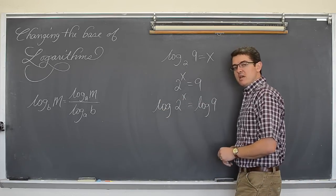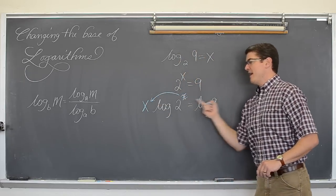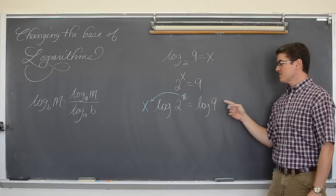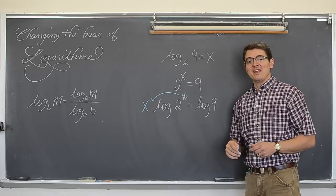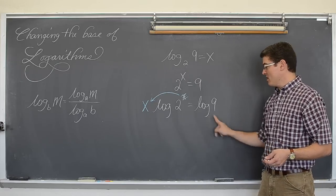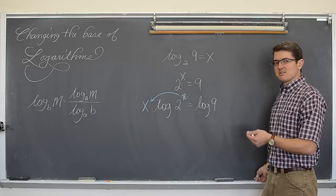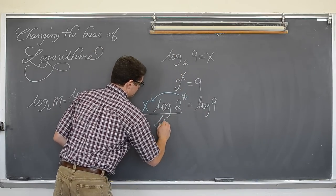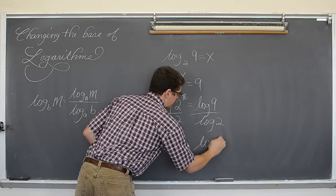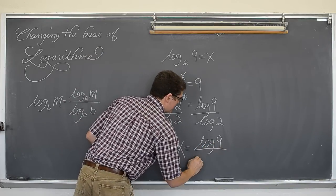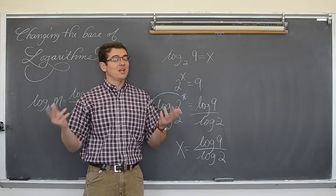The power property of logarithms allows me to take this x and move it down out front. And now we have x times the log of 2 equals log of 9. And how do you think we are going to solve this for x? We are going to undo that multiplication. And you are going to see an expression or an equation with a part of it that looks just like what we had when I just directly applied the change of base formula. So we are going to divide both sides by the log of 2. And x is equal to log base 10 of 9, or you could have used natural log, divided by log base 10 or just that common log of 2. And as long as you type this in the calculator correctly, you will have your final answer.